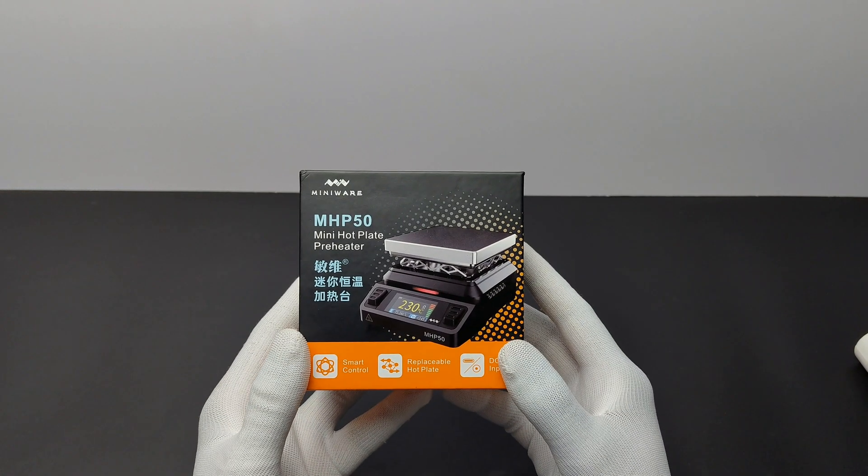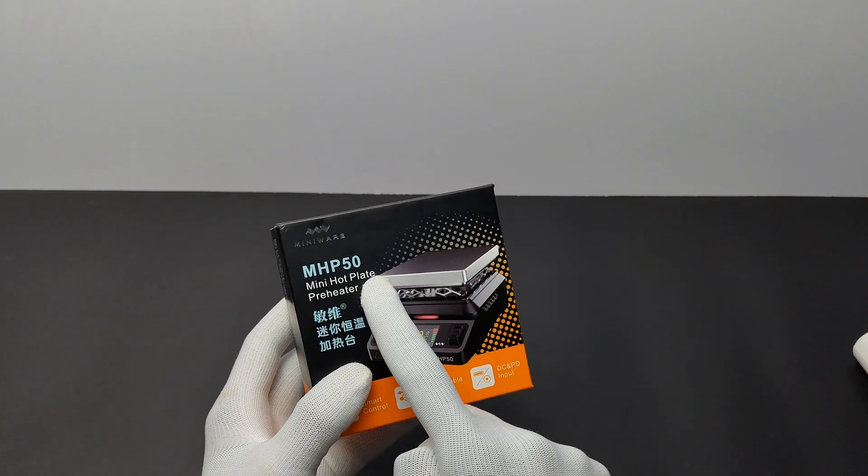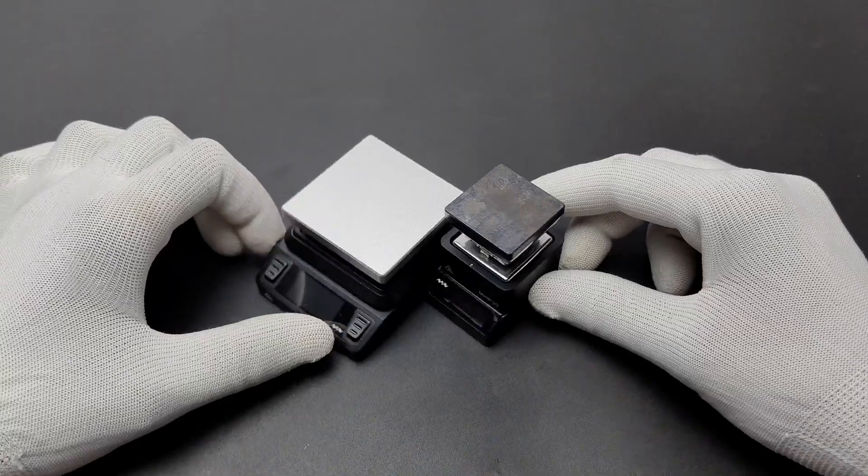Hi there, today we got a new preheater hotplate from Miniware called MHP50. This one is the big brother of MHP30.